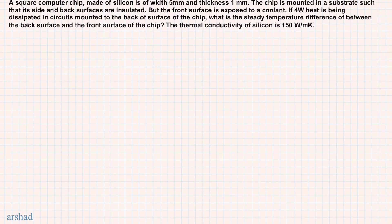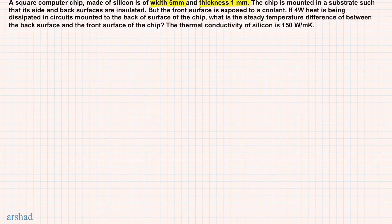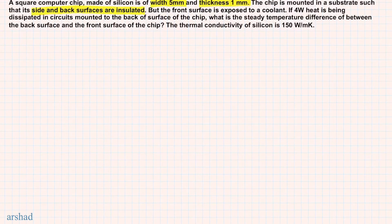So this is the problem we have. You have a square computer chip made of silicon and it has a width of 5 mm and a thickness of 1 mm. The chip is mounted in a substrate such that its side and back surfaces are insulated, but the front surface is exposed to a coolant. The heat is dissipated in the circuits mounted to the back surface of the chip.